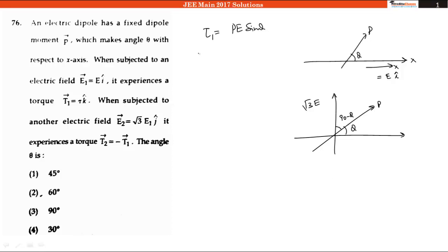So now this new torque will be equal to p into E, which is root 3 E, into the angle which is 90 minus theta, or I can say it is equal to root 3 PE cos theta.